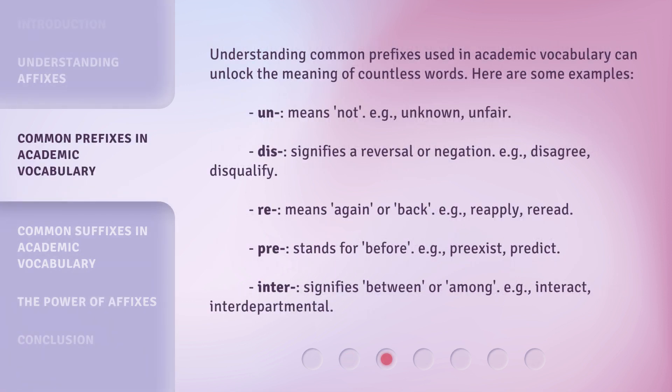Understanding common prefixes used in academic vocabulary can unlock the meaning of countless words. Here are some examples: 'Un' means 'not,' e.g., unknown, unfair. 'Dis' signifies a reversal or negation, e.g., disagree, disqualify.